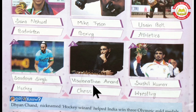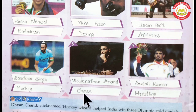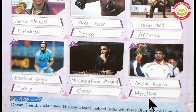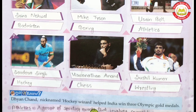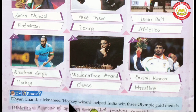Eighth one is Vishwanathan Anand. As we know, he is a very good chess player. Number nine is Susheel Kumar, who basically belongs to Wrestling — wrestling means 'kusti.' Do you know? Dhyan Chand's nickname is 'Hockey Wizard.' He helped India win three Olympic gold medals.